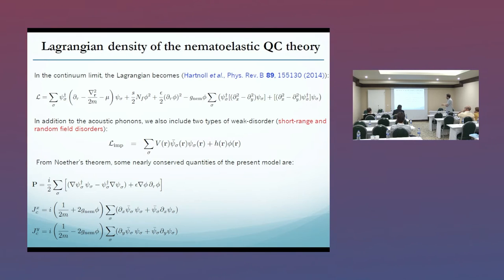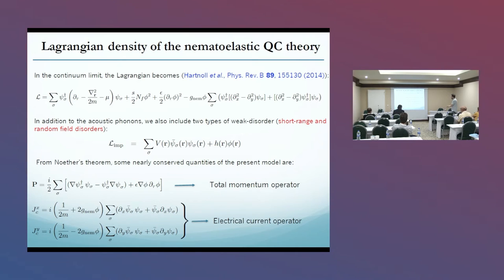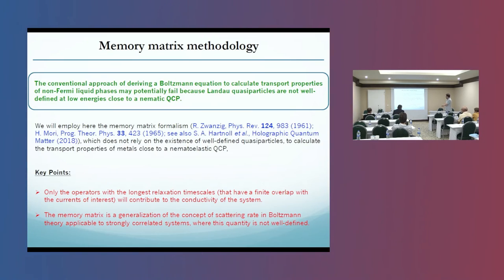From the effective theory, we can calculate the conserved quantities. The theory is invariant to space translations, so we get the total momentum operator. The theory is also invariant due to U(1) symmetry, and we get the electric current operator of the theory.